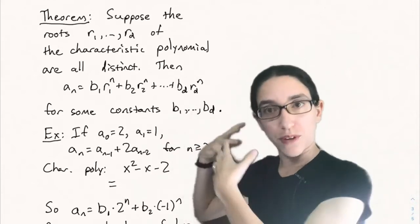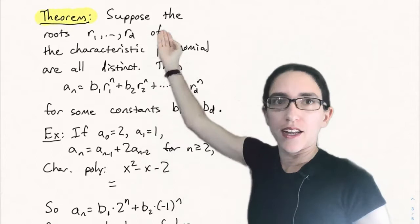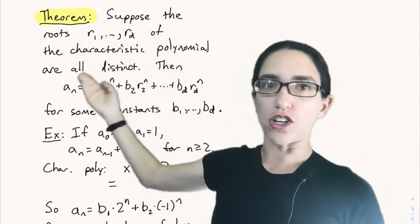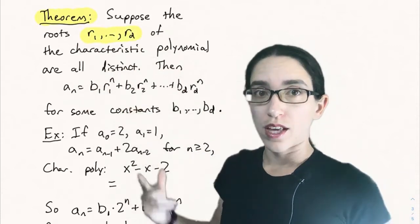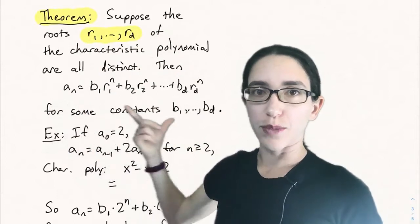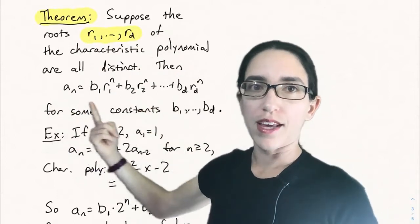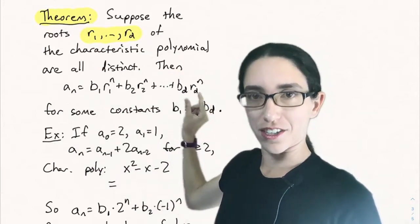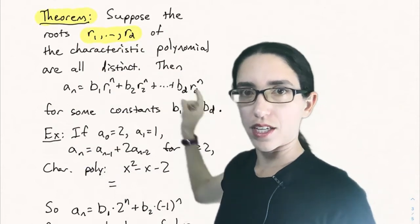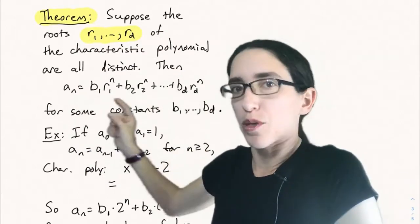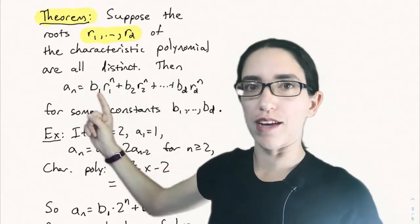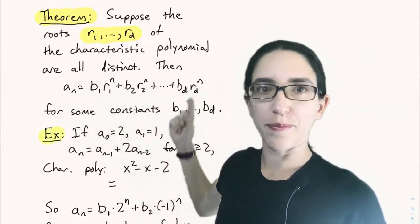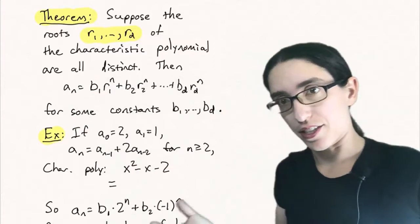Here's the main theorem: in the case that the roots r1 through r_d of the degree-d characteristic polynomial are all distinct, the explicit formula for a_n is a linear combination of each root raised to the nth power. We know each r_i^n individually satisfies the recurrence, and combining them with constants b1 through b_d gives the right solution for any initial conditions.